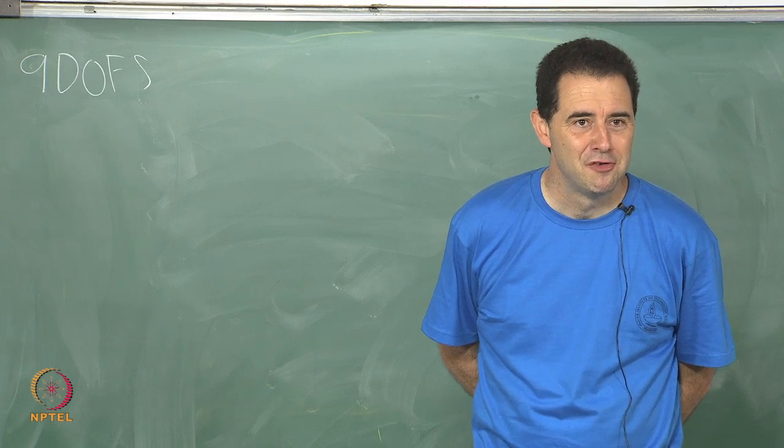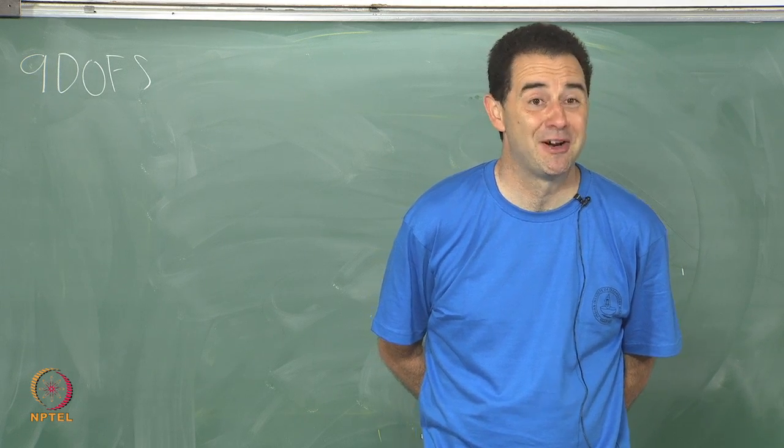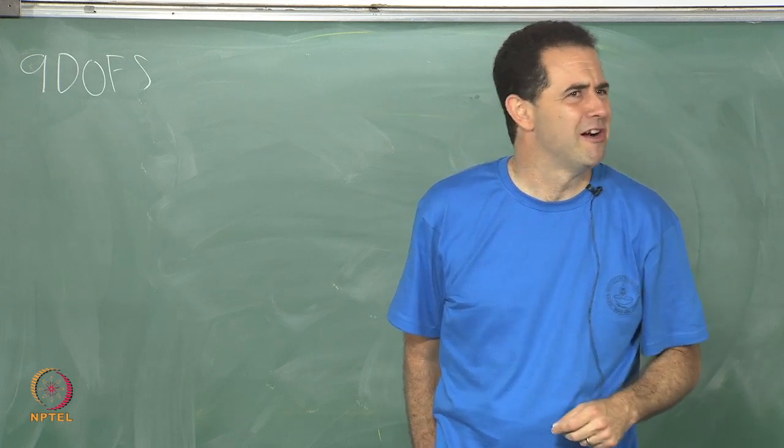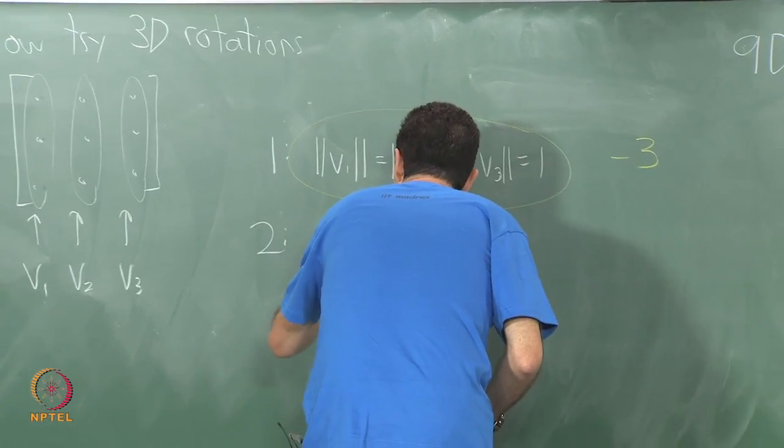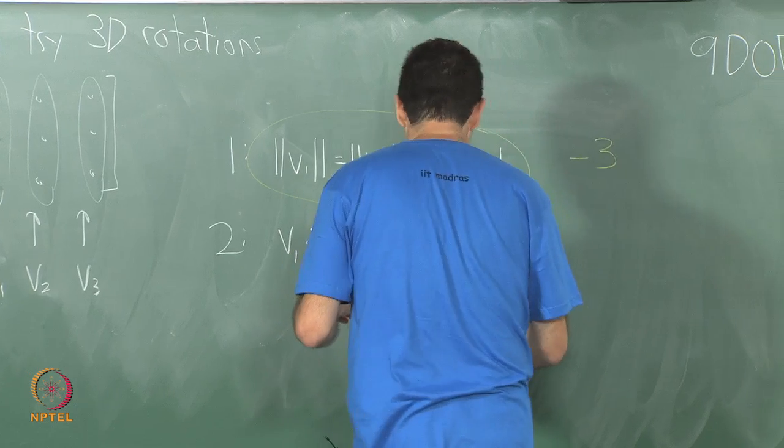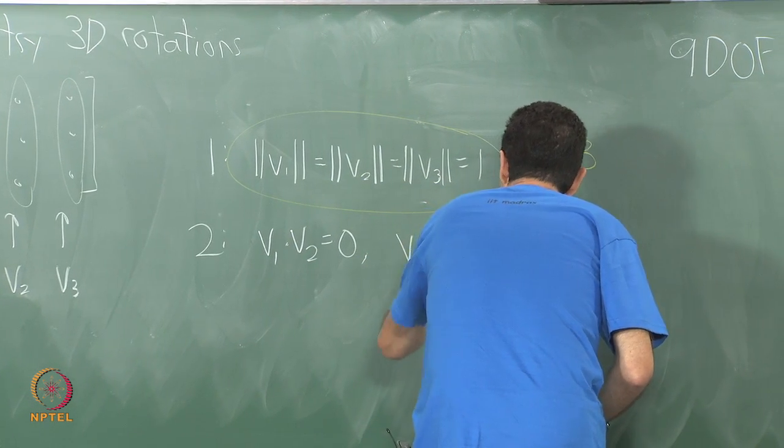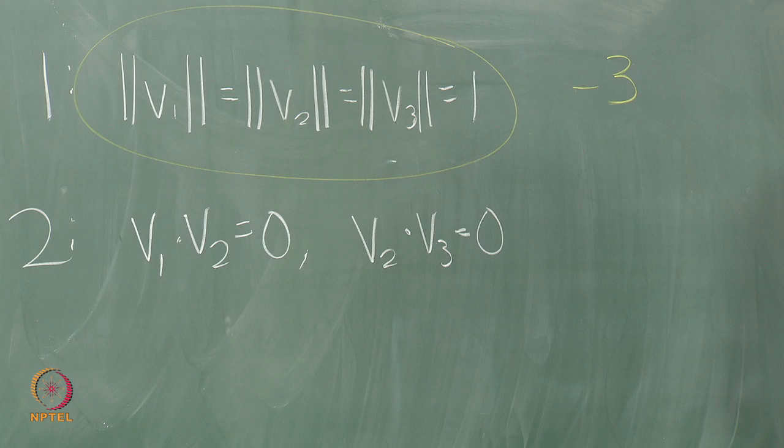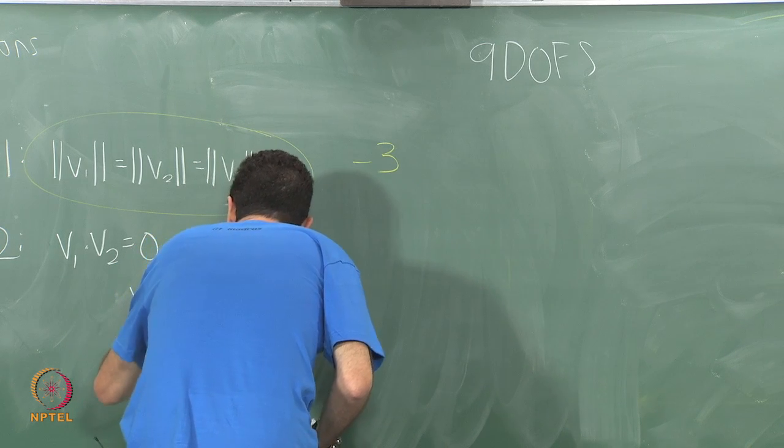We do all pairs. From combinatorics, 3 choose 2 is equal to 3. There is 3 pairs. It does not matter what the ordering is because dot products do not care about ordering. Cross products do. I just need to pick the pairs here. I need to have v1 dot v2 equals 0, I need to have v2 dot v3 equals 0, and v1 v3 right, get the other pair. I need to have v1 dot v3 equals 0.